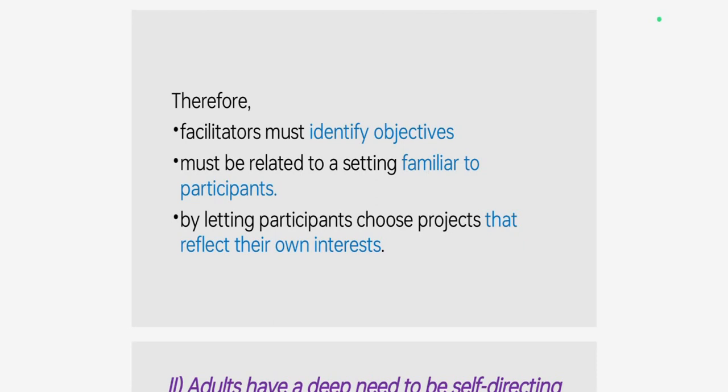Learning has to be applicable to their work or other responsibilities to be of value to them. Therefore, based on this first characteristic, facilitators must identify objectives for adult participants before training begins. Theories and concepts must be related to settings familiar to participants. This need can be fulfilled by letting participants choose projects that reflect their own interests, because adults have a need to know why they should learn something.